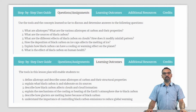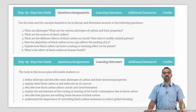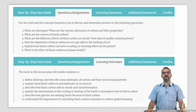You can use this lesson plan, the tools in them, and the concepts learned to discuss and determine answers to the following questions — which you can also ask your students: What is an allotrope? What are the various allotropes of carbon? What are the sources of black carbon? What are the different effects of black carbon on clouds? How does it modify rainfall patterns? How does the deposition of black carbon on ice caps affect the melting of ice? Explain how black carbon can have a cooling or warming effect on the planet. What is the effect of black carbon on human health?